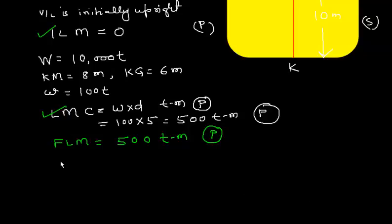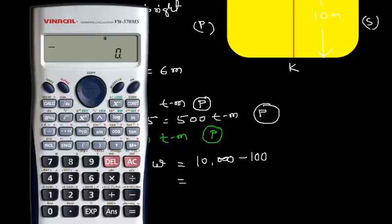Final displacement is initial displacement minus weight discharged, so it is 10,000 minus 100, which gives us 9,900 tons.